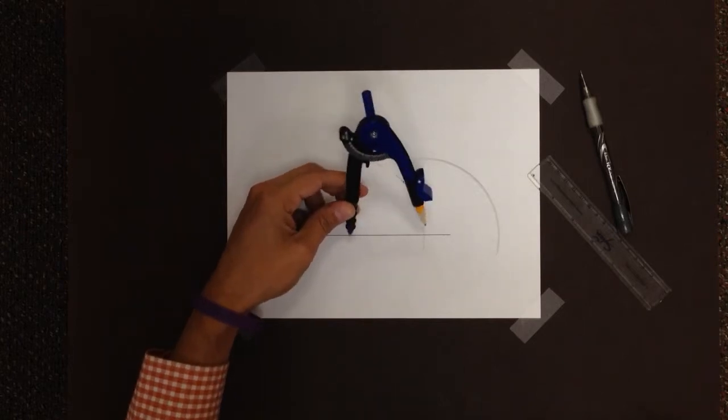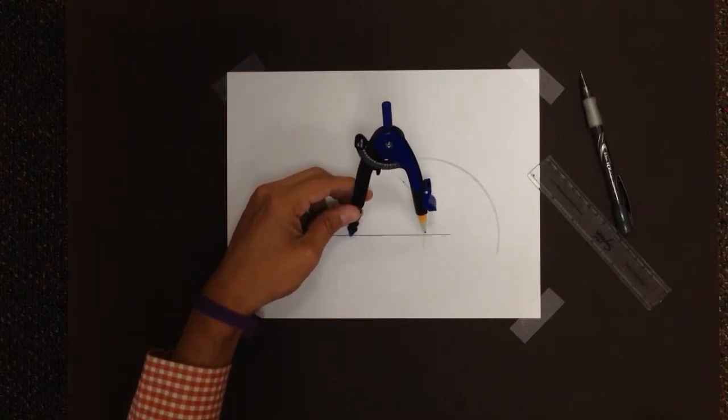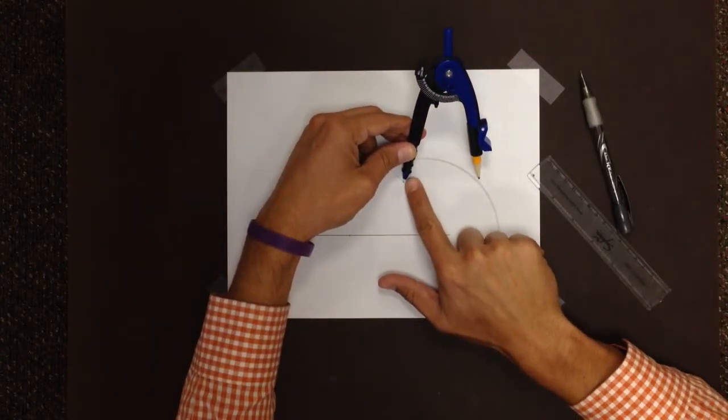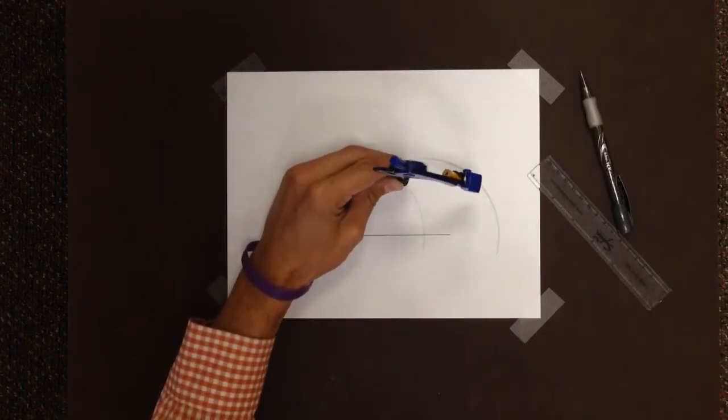But what I can do is I can use that to my advantage, because if I move this distance from the point to where my arc crosses to this spot here to where the non-pencil end is now on that point, and I draw another arc,